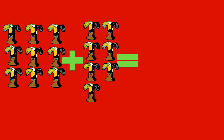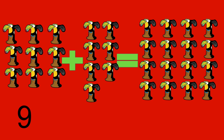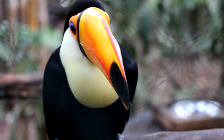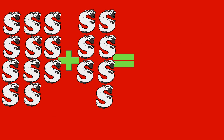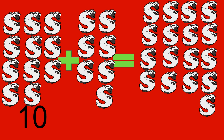9 toucans plus 7 toucans equals 16 toucans. 9 plus 7 equals 16. Toucan. 10 sheep plus 7 sheep equals 17 sheep. 10 plus 7 equals 17.